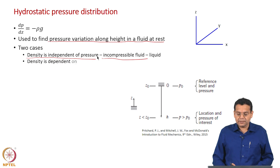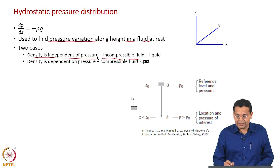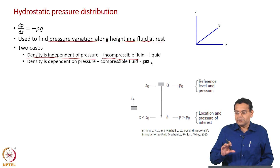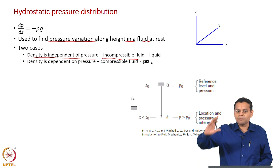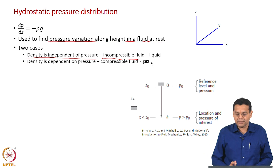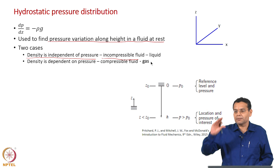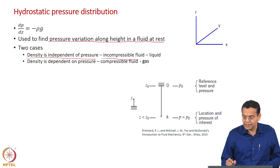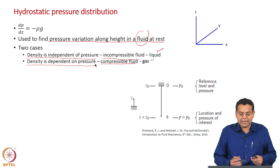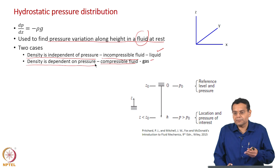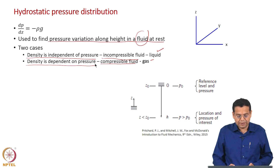The second case is pressure distribution in a gas, for example air — the pressure variation in the atmosphere. We have atmospheric pressure at ground level, and as you travel up a hill, how does the pressure vary? In this case, the fluid is air, a compressible fluid for which density is dependent on pressure, and that must be taken into account when deriving the hydrostatic pressure distribution. So we consider two cases: liquid (incompressible, density independent of pressure) and gas (compressible, density depends on pressure).